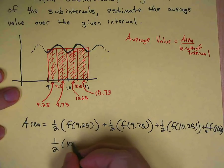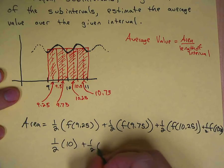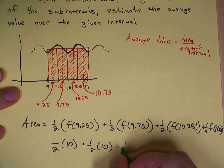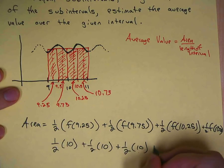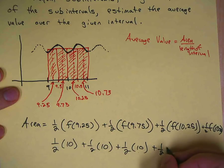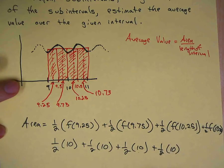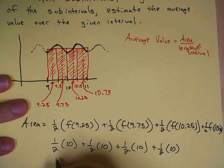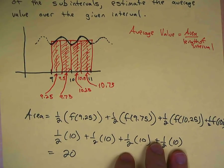You could factor that half out if you wanted to, could have done that earlier. If you do all that, that's 5, 5, 5, 5. That's equal to 20. 20 is the area of the rectangles.